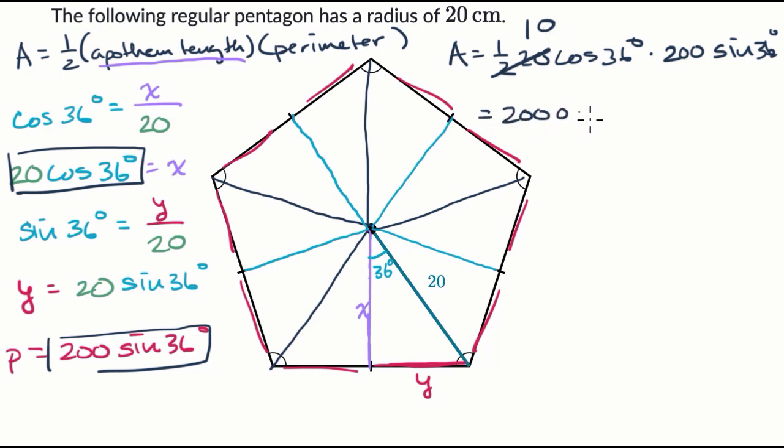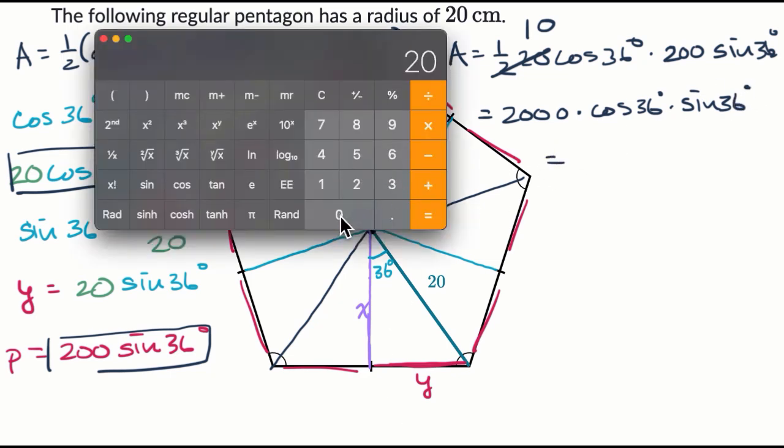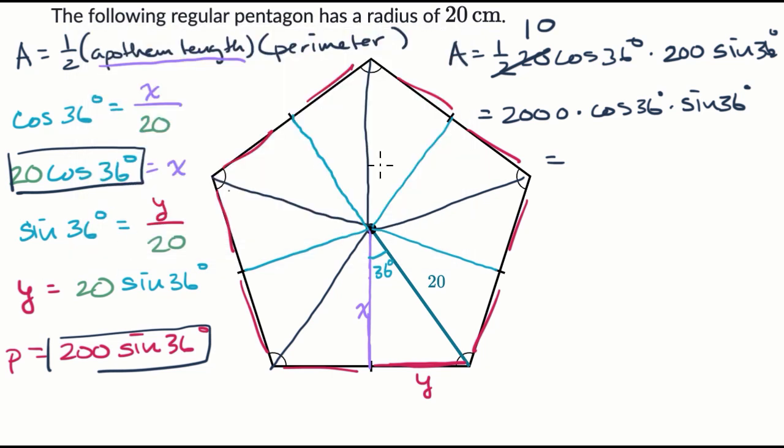So this is going to be 2,000 times cosine of 36 degrees times sine of 36 degrees, which is going to be equal to, so I have 2,000 times, let me open the parentheses just in case, 36 cosine, close parentheses, times, open parentheses, 36 sine, close parentheses, is equal to, I'll just round to 951 square centimeters. So it's approximately equal to 951 square centimeters. And we're done.